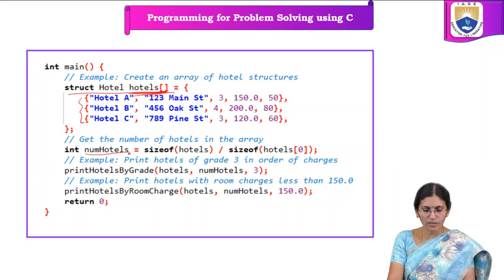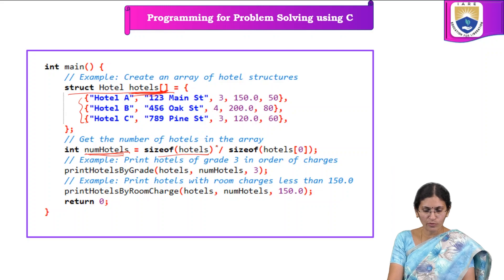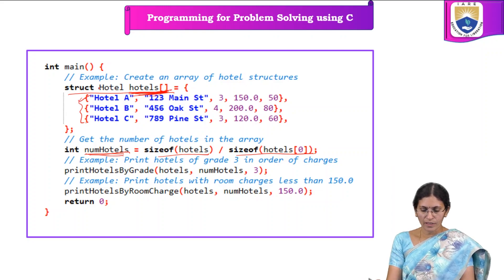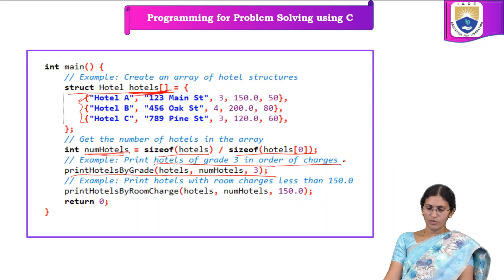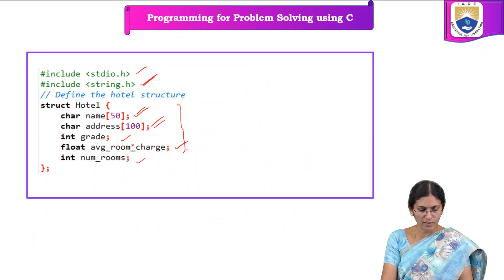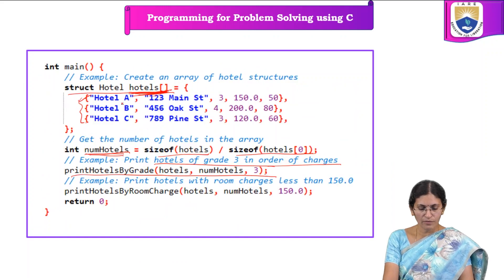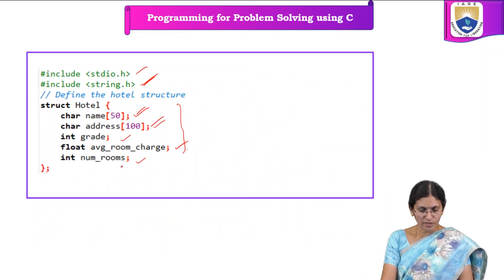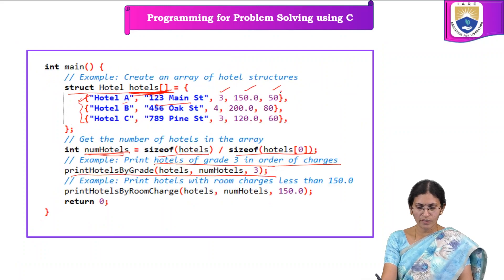The number of hotels can also be calculated using: sizeof(hotels) / sizeof(hotels[0]). After that, we call the function to print hotels by grade 3 in order of charges. Each hotel has five members: name, address, grade, room charge, and number of rooms. For example, hotel A and hotel C are the initialized hotel records.